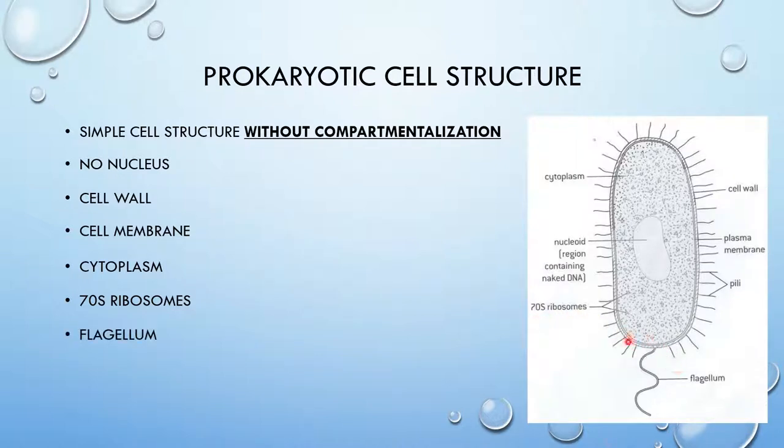The flagellum right there rotates to propel the cell. It has to do with the locomotion of prokaryotes. The pili are hair-like projections from cell wall and as you can see, they protrude around the cell like that.